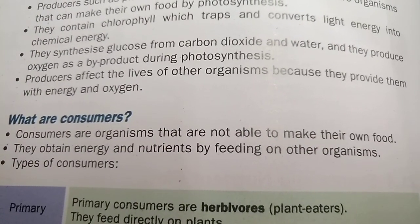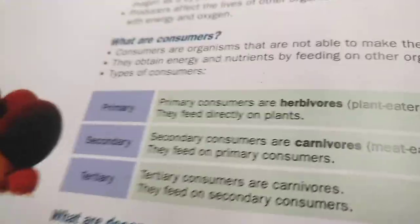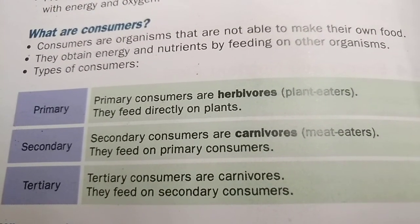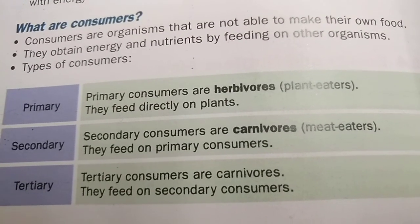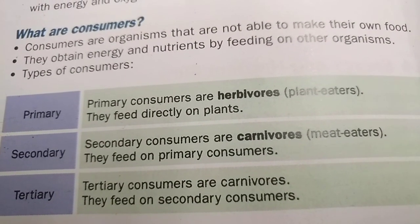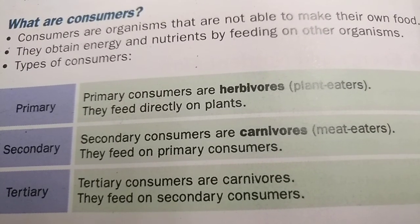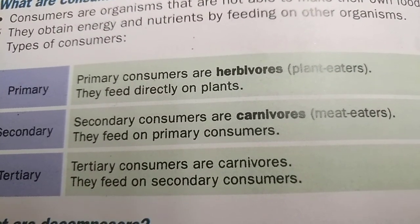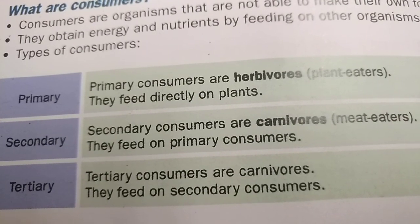Producers affect the lives of other organisms because they provide them with energy and oxygen. Now, consumers are organisms that are not able to make their own food — they obtain energy and nutrients by feeding on other organisms. Primary consumers are herbivores: plant eaters that feed directly on plants. Secondary consumers are carnivores: meat eaters that feed on primary consumers. Tertiary consumers are also carnivores that feed on secondary consumers.